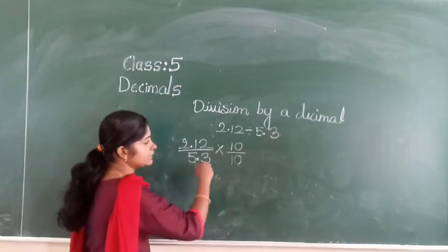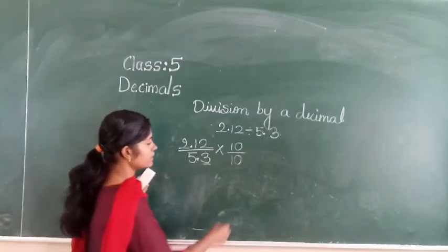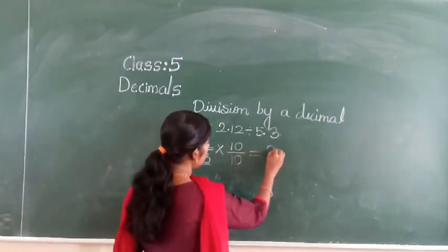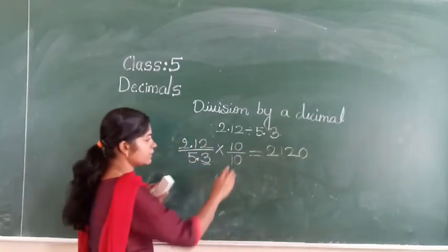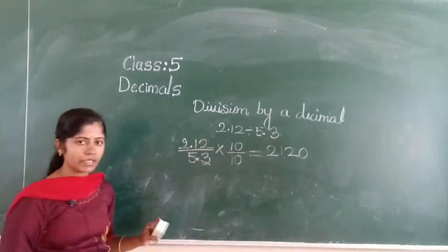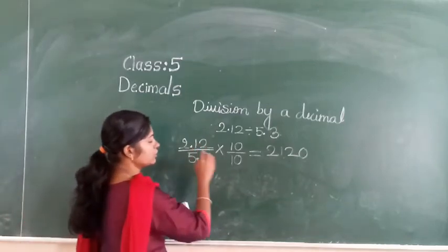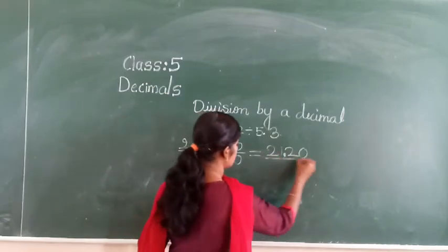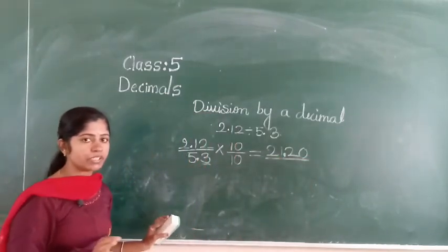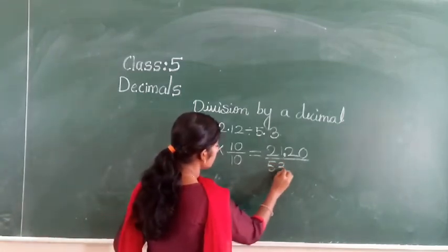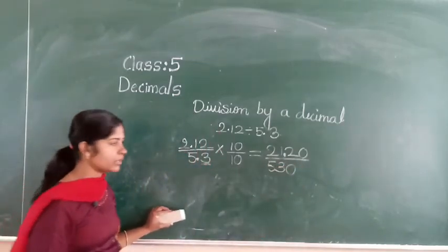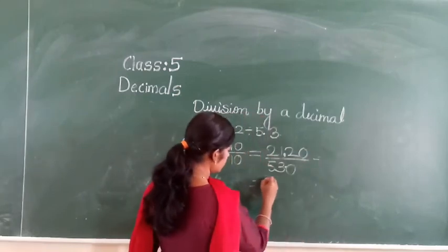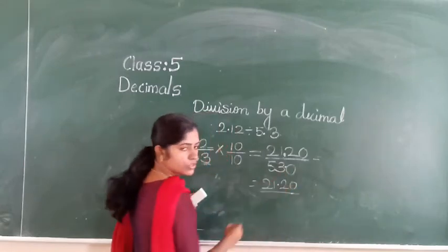If 2 digits are there, you take 100. If 3 digits are there, you take 1000. Now for 2.12: you assume 212 is there. 212 ones are 212, and multiplied by 10 gives 2120. After how many digits does the point come in 2.12? After 2 digits, so I give the point here, making it 21.20. For 5.3: you assume 53 is there. 53 ones are 53, and multiplied by 10: after 1 digit the point comes, giving 53.0 — which is just 53.